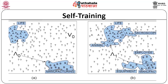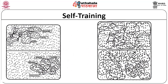What happens iteratively is that from 'life' and 'manufacturing', the sets expand to include related terms such as 'animal', 'employee', and 'equipment'. The sets keep getting expanded through iterative updating, continuing until the residual set stabilizes — meaning no more change occurs — and all data points have been processed.